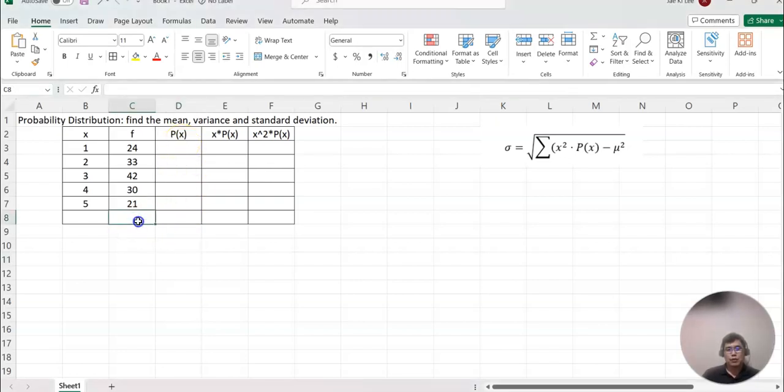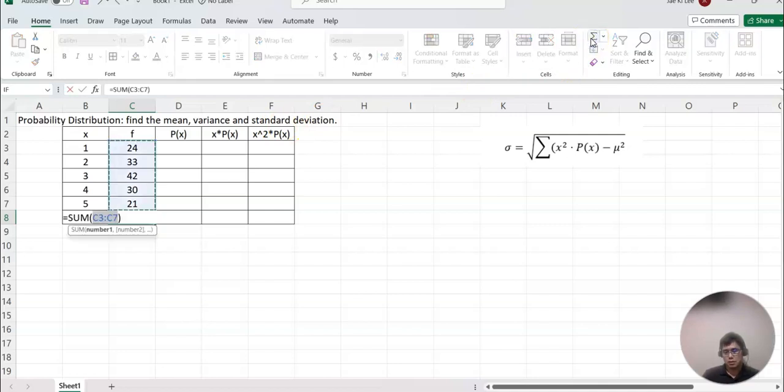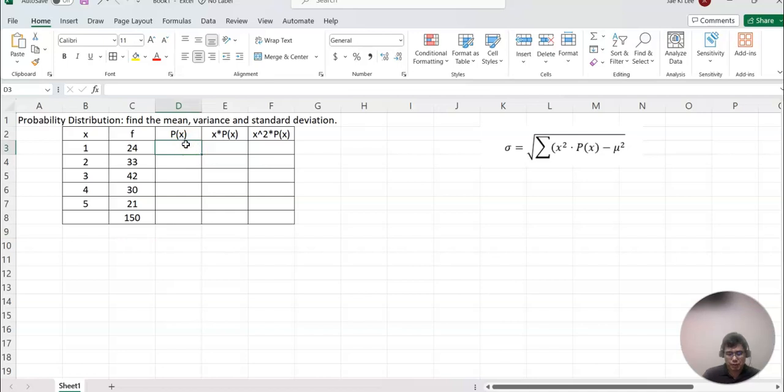You need to find the total frequency first. I'm going to select autosum here and find the total sum. Then each probability equals each frequency divided by the total, which is 150.